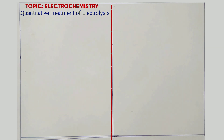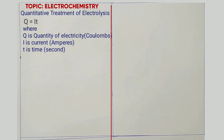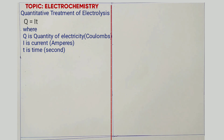Now to begin, you are supposed to know how to find the quantity of electricity. Quantity of electricity is always given by the formula: quantity of electricity equals current times time. That is Q is equal to IT.